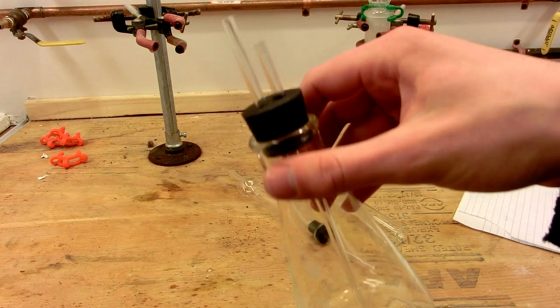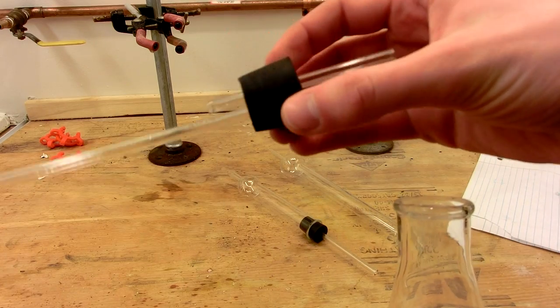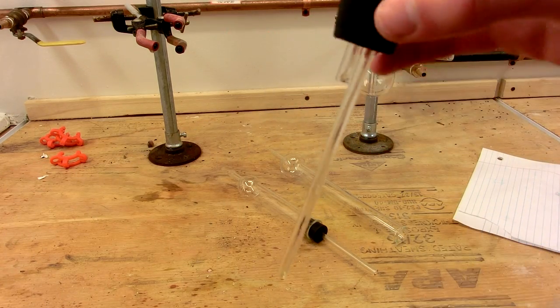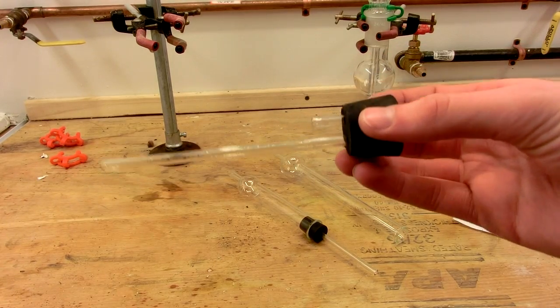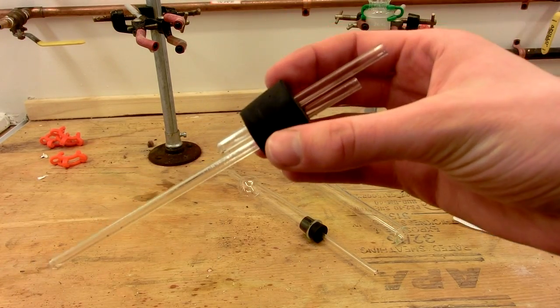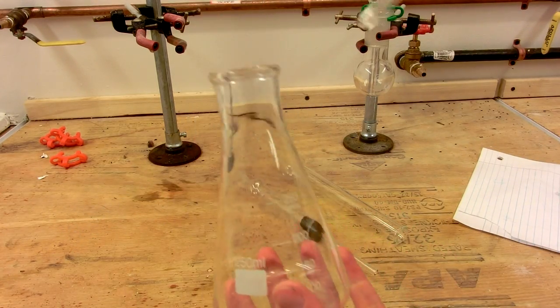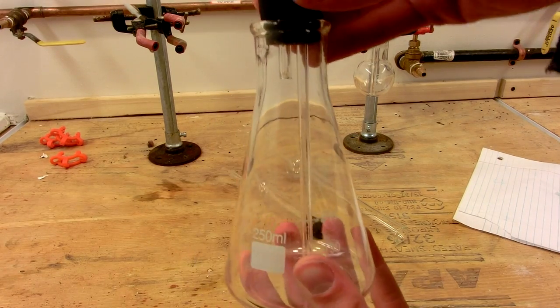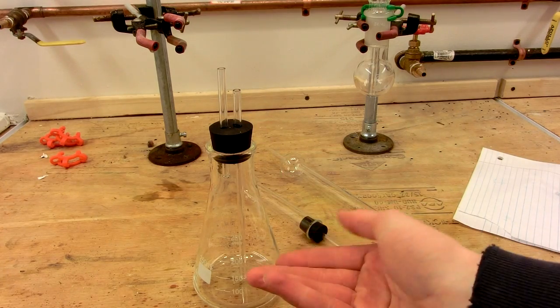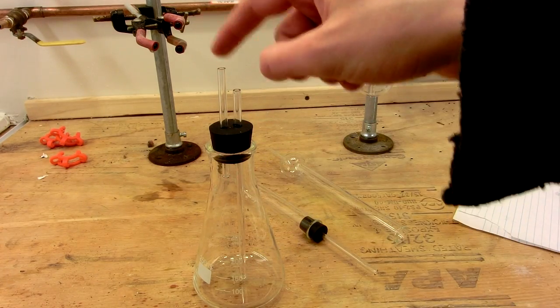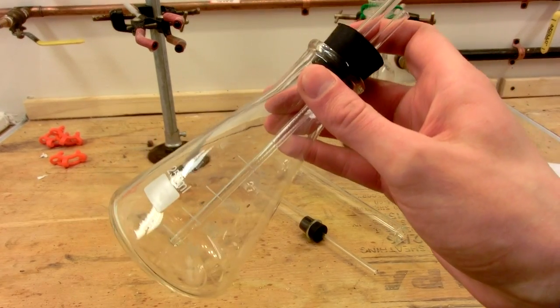This right here is an example of a suckback trap. It's just an Erlenmeyer flask with two different lengths of tubing in it. Now a suckback trap doesn't necessarily have to have one long piece of tubing and one short piece of tubing. You can also have two short pieces of tubing. But this also doubles as a gas drying apparatus, because I could, for instance, put solid desiccant into this, and then wiggle this tube down through the desiccant, and as long as I fed gas into the long tube, where it would go all the way to the bottom, and then travel up through the desiccant, I could get dry gas out the top. So this has a dual function. It can be a gas dryer or a suckback trap.